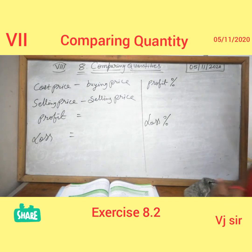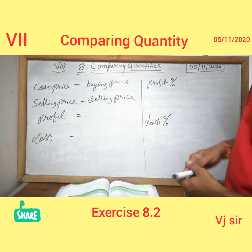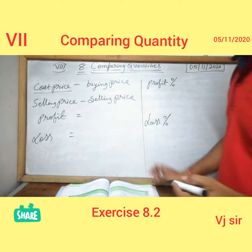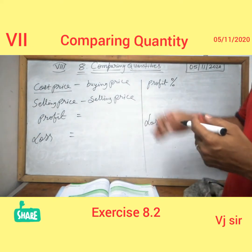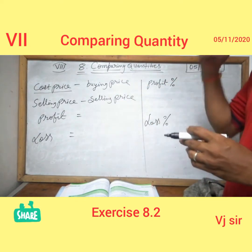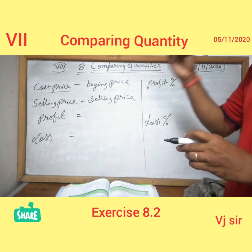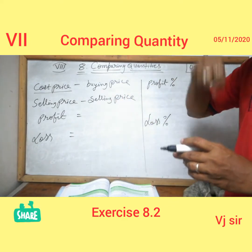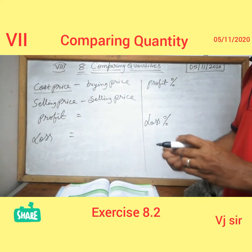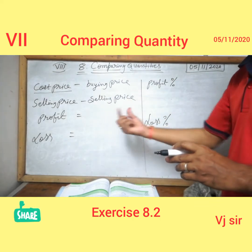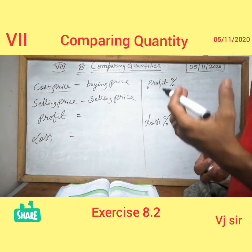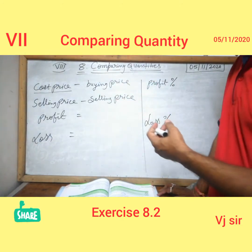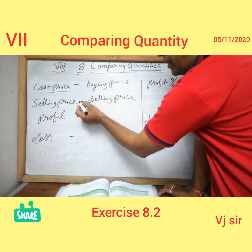Now we move to some more points. Cost price means it is the buying price — the price at which we buy any product. Then selling price means the price at which we sell the product.